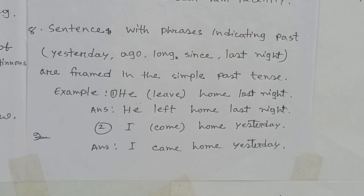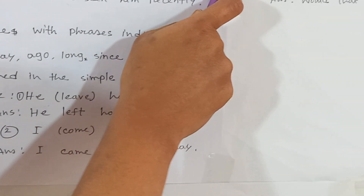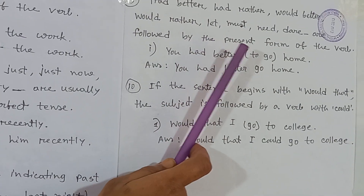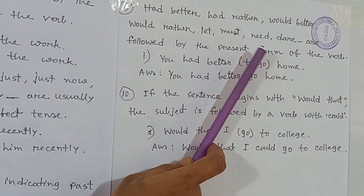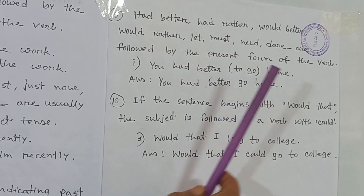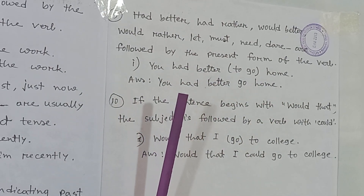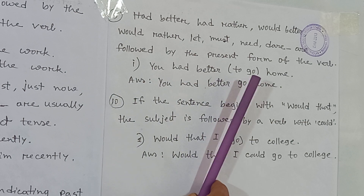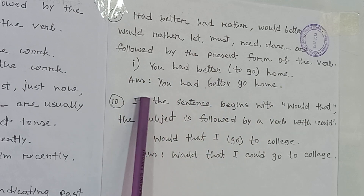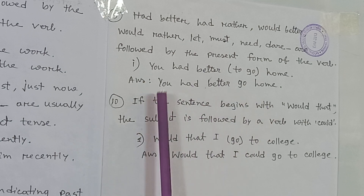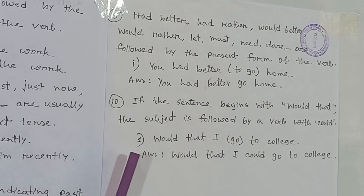Rule number nine: had better, had rather, would better, would rather, let, must, need are followed by the present form of the verb. For example, 'You had better (to go) home' — you write 'You had better go home.'